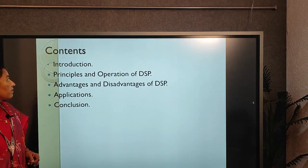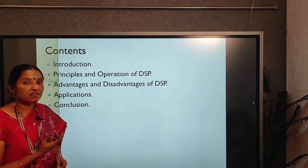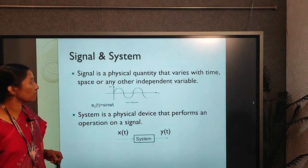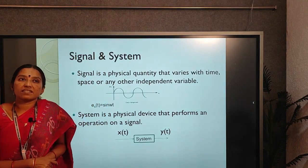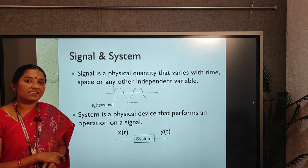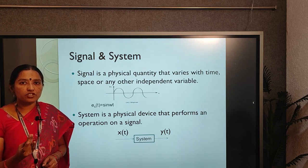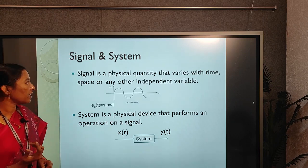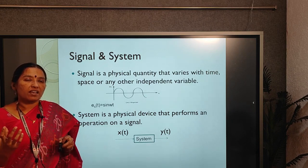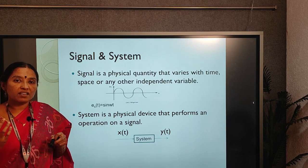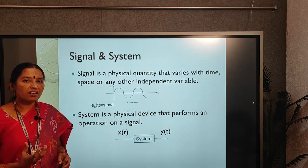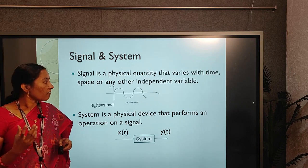In this first chapter, we will discuss the introduction, principles, and operation of DSP, and advantages and disadvantages of DSP. Signal processing is any operation that changes the characteristics of a signal — characteristics means either amplitude, phase, or frequency. A system is a physical device that performs any operation on a signal.